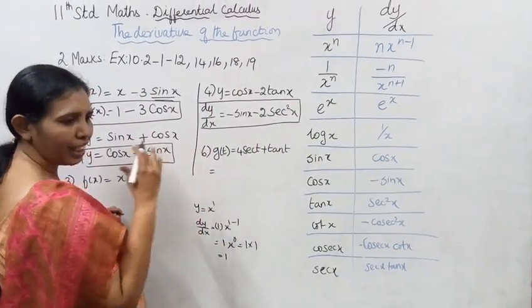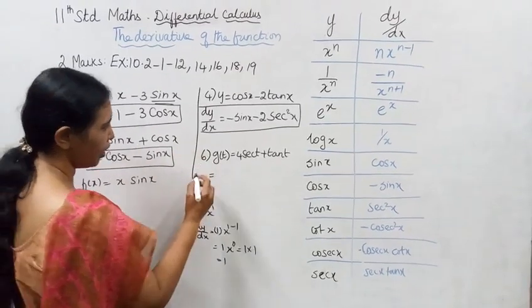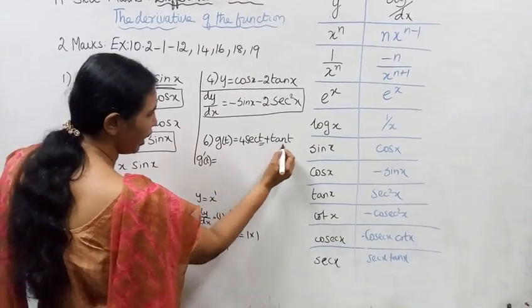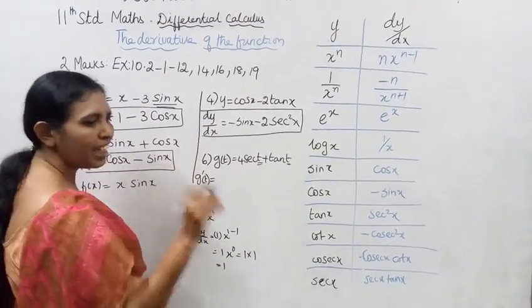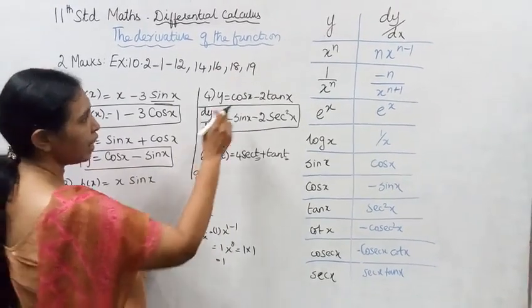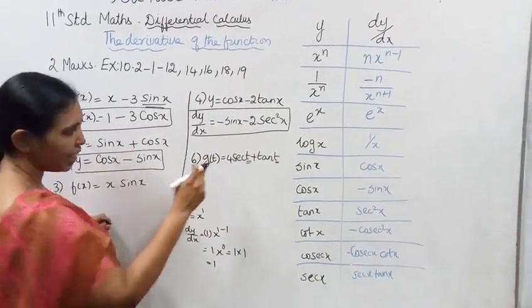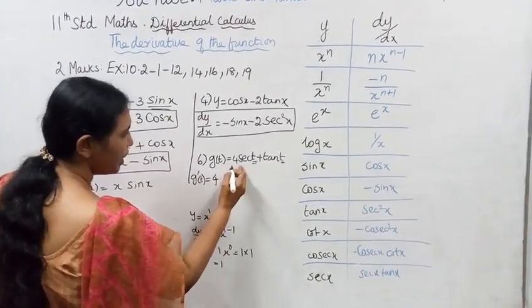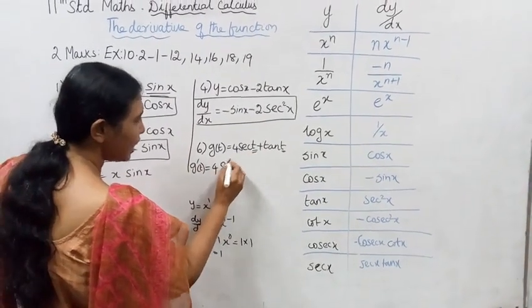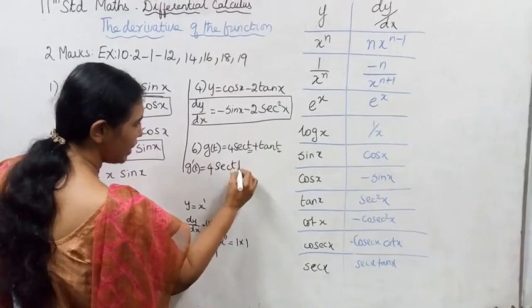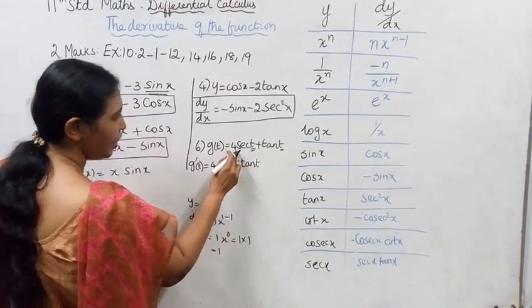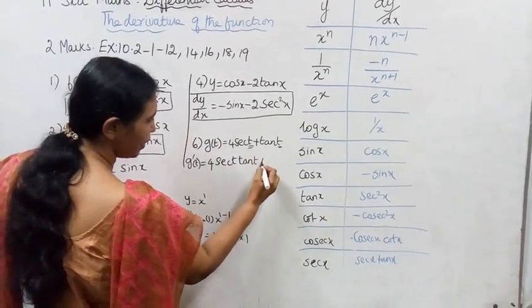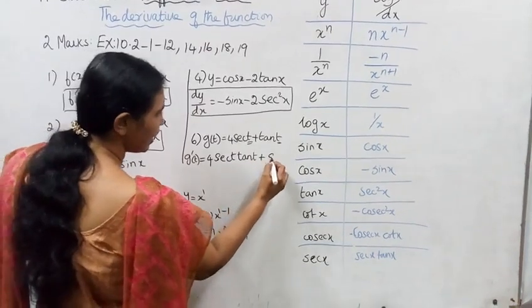Functions and derivatives — the derivative of the unit. G of t, G dash of t. Differentiating with respect to t. G(t) = 4 sec t + tan t. Derivative of sec t is sec t·tan t, so 4 sec t·tan t. Derivative of tan t is sec²t. Therefore G'(t) = 4 sec t·tan t + sec²t.